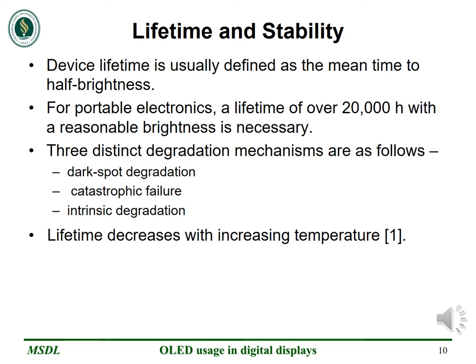The lifetime of a device is usually defined as the mean time to half brightness. Most prototypes developed so far have a lifetime of 6000 to 8000 hours at room temperature, which is low for applications such as television or computer displays. In the three distinct degradation mechanisms, the first two can be solved by means of adequate control over the device fabrication conditions. But the intrinsic degradation mechanism is not really solvable and remains a huge issue, especially for the blue color.